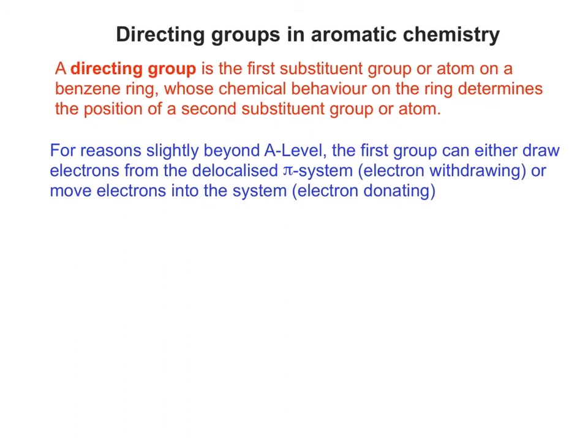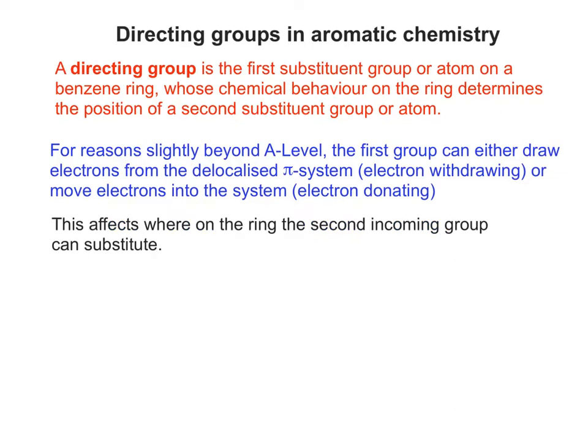Although the exact reasons behind it are slightly beyond the A-level specification, if you consider the first group that was there initially, it can either draw electrons from the delocalised pi system or move electrons into it. Therefore, this affects where on the ring the second incoming group can substitute.